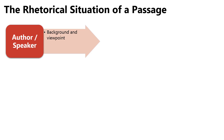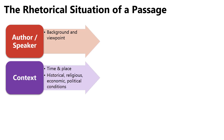First is the author or the speaker. What is the personal background of the author or speaker, and what is their viewpoint or perspective? Next is the context, or the time and place in which this passage is occurring, and that will definitely differ depending on whether the text is a letter, a speech, or any different type of piece.